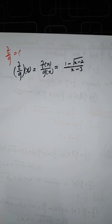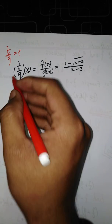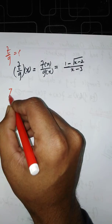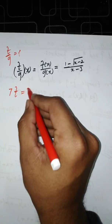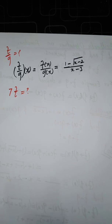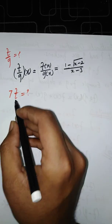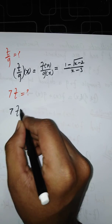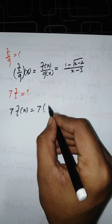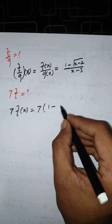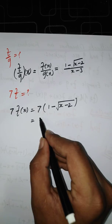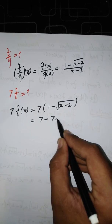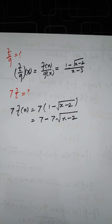Using the same example, you can also find 7 multiplied by F. To multiply a function by a constant, just multiply F of x by that constant. So 7 times F of x equals 7 times 1 plus square root of (x minus 2), which gives 7 plus 7 times square root of (x minus 2).